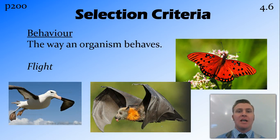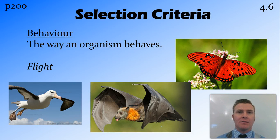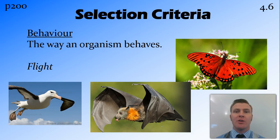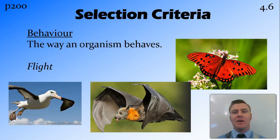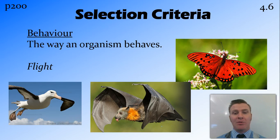Another way that we're able to classify organisms is by how they behave. Classifying things by behaviour is a little bit tricky, because generally when we're classifying things, somebody goes out into the field, sees something that they haven't seen before, they capture it and kill it, mount it, and bring it into the lab to be classified. So classifying by behaviour can be a little bit tricky. However, if we were to classify by the ability to fly, we could have the albatross, the bat, and the butterfly all in the one group.